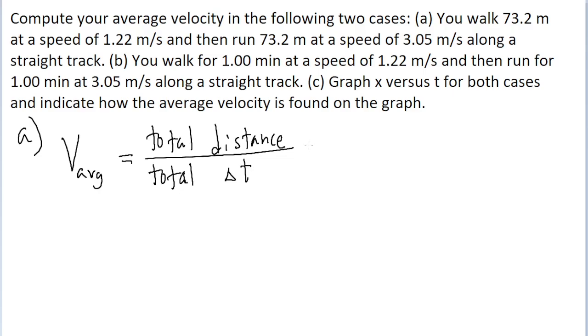So because we're given the description of this person's motion in two separate phases, we want to find the distance traveled for each of those phases, and then find the total time for each of those phases. We'll add up the distances and put that in the numerator, and add up the times and put that in the denominator. So if we want to break this down even more, let's label some variables.